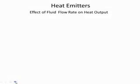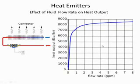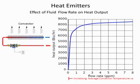When we balance, we need to know the effect of flow rate on heat output in a heat emitter. It's not a linear relationship — it's a nonlinear relationship. If we take a convector, call it a baseboard, and send high temperature water through it while measuring heat output as we change the flow rate, we get a curve that looks something like this. You can see quickly it's very nonlinear: as we increase flow rate, heat output increases, but there are parts where it increases very quickly and parts where it increases very slowly.